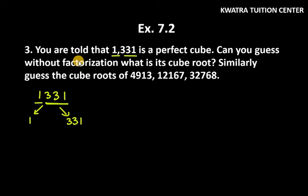Now, what do we do? Look at the number 331. What is the ones place digit of 331? The ones place digit is 1. So we take the ones place of the required cube root as 1.